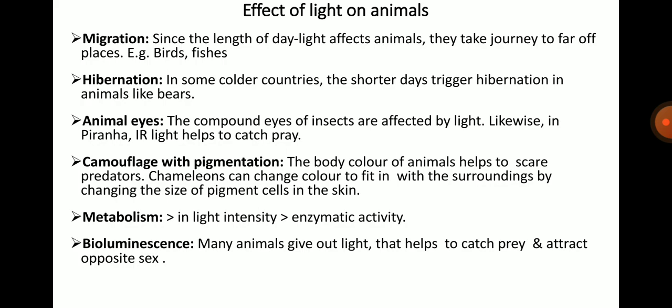Light also affects vision. In dim light, a dull and overlapped superposition image is formed in insects. In strong light, an apposition image is formed. Many fishes locate their food with the help of vision that depends upon the intensity of light. Most nocturnal vertebrates have abundant rods in their eyes to make visibility possible even in diffused light, while diurnal vertebrates have greater cones in their eyes.